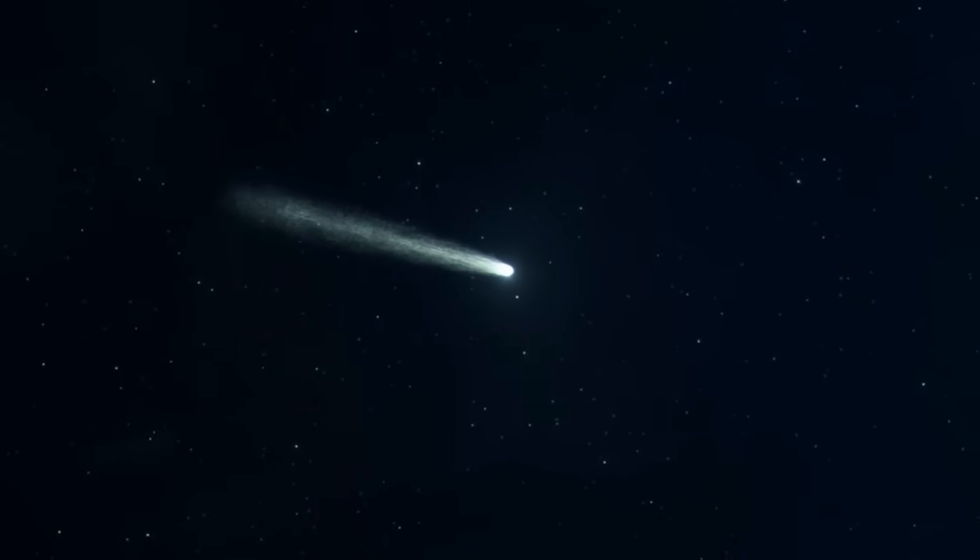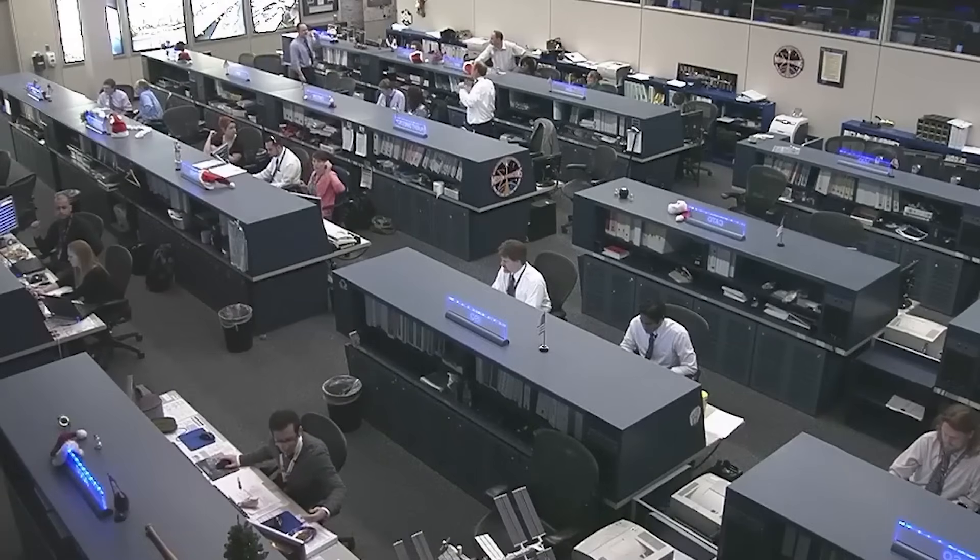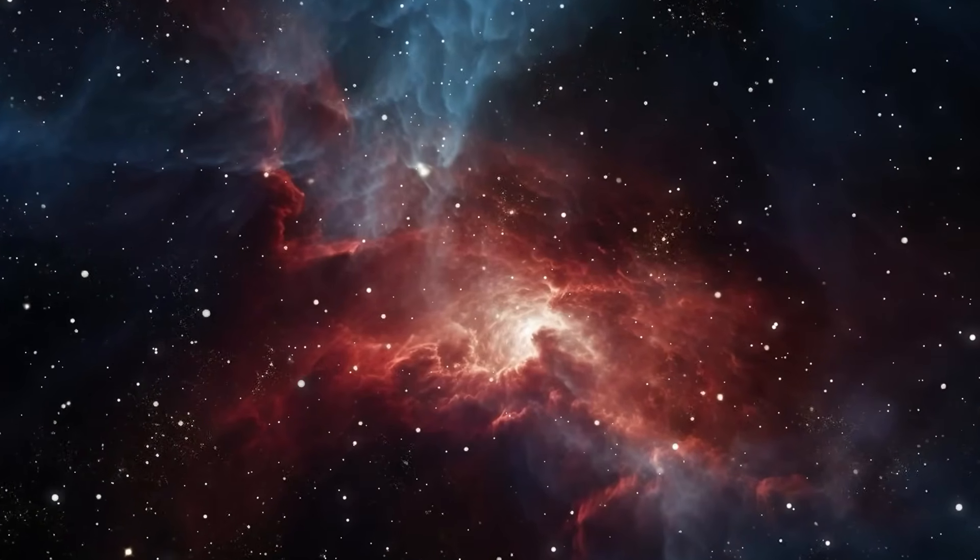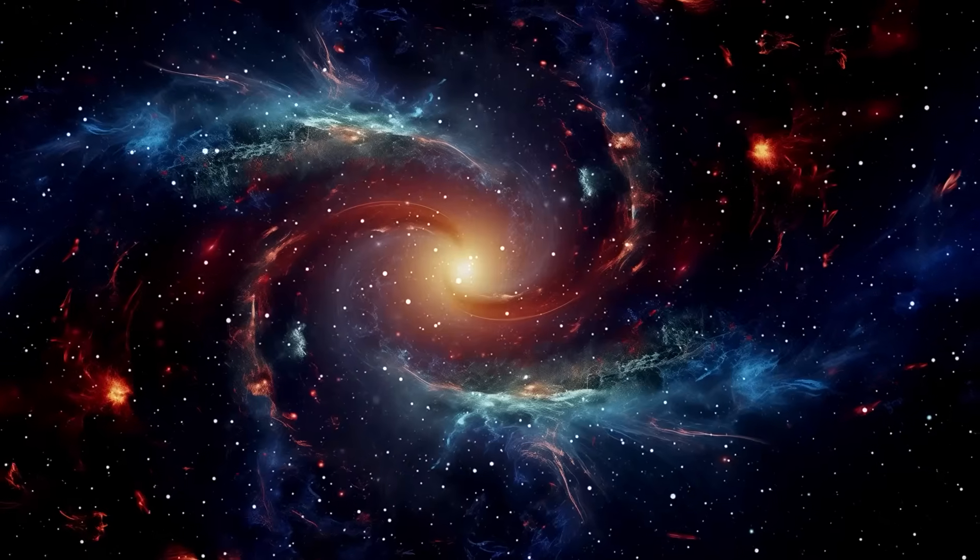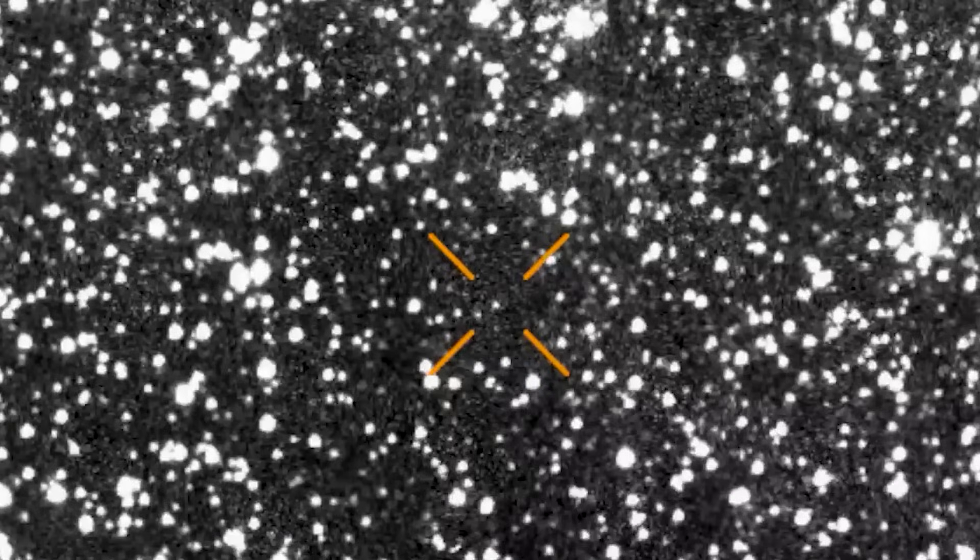3i Atlas is a mirror, and when we look into it, all it reflects is our own ignorance. It's a cosmic reality check. It reminds us that for all our incredible technology and accumulated knowledge, the universe is still infinitely vast, profoundly mysterious, and operates on rules we are only just beginning to understand. This one object has single-handedly challenged decades of theories about what an interstellar visitor is supposed to look like. Many people are crazy about getting definitive, simple answers, but in the world of science, the most exciting and important moments are the ones that leave you completely stumped.